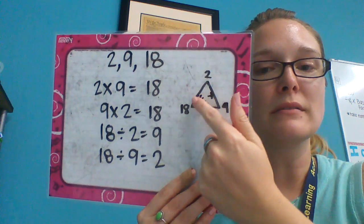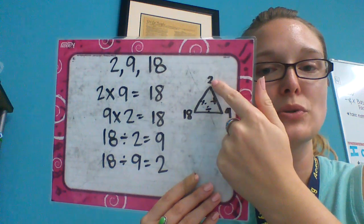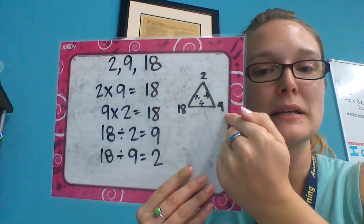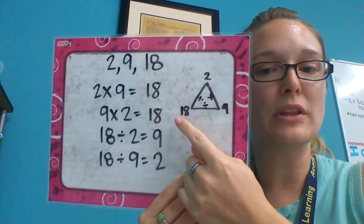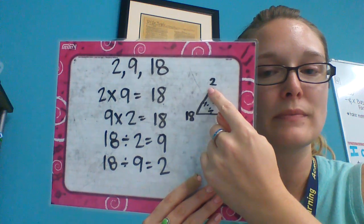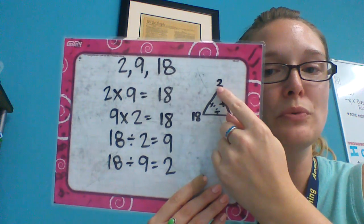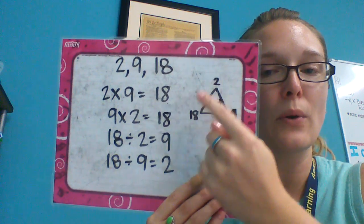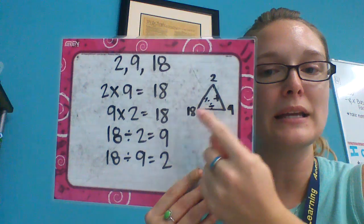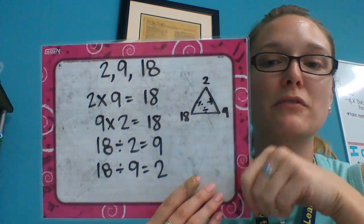The division, so this would be 18 divided by 2 equals 9. They are all related to each other. 18 divided by 9 equals 2. See how I go from each corner? 9 times 2 makes 18, or 2 times 9 equals 18. So I have written all of those out. That is my fact family for this number.